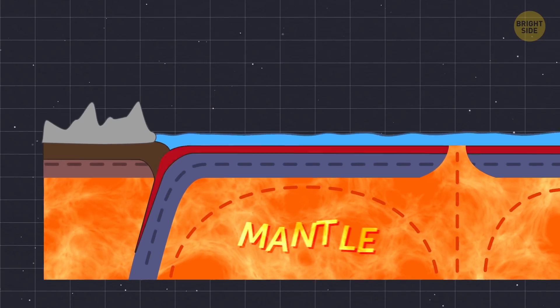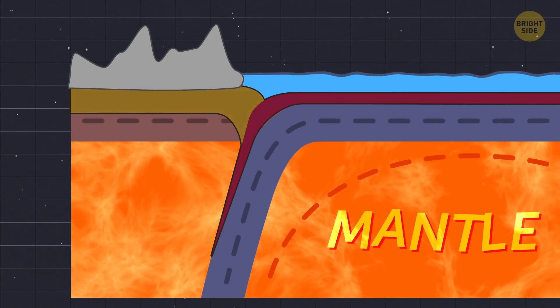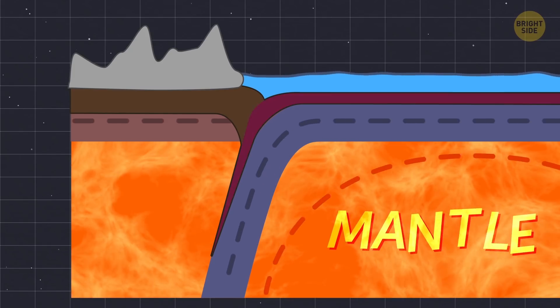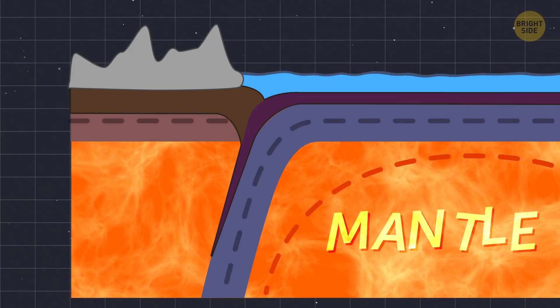For example, the oceanic crust is denser than the continental. So at a subduction zone, the oceanic crust will be the one to sink below the lighter continental crust.